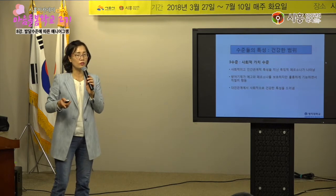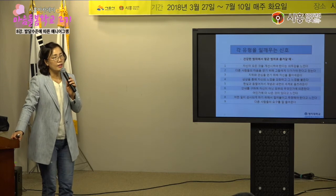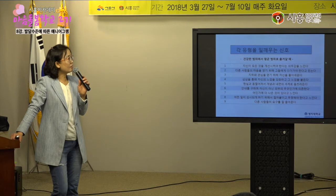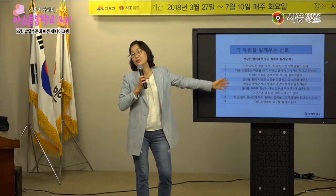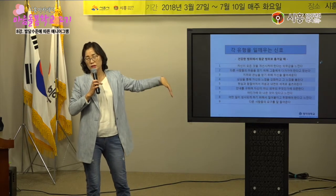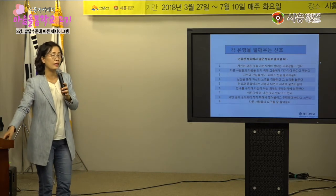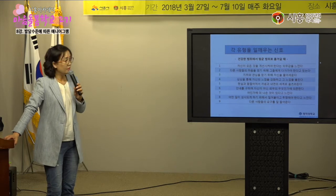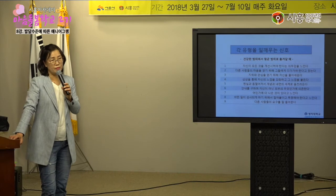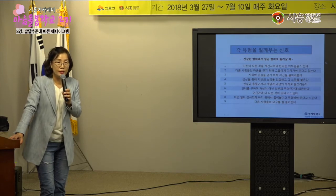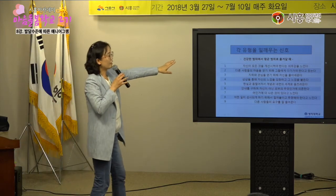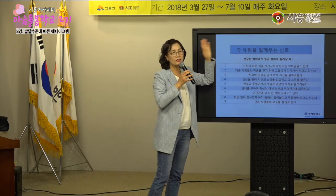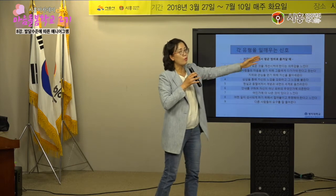쇼크 포인트를 거치면서 4수준으로 내려가는데, 건강한 범위에서 평균 범위로 내려가는 쇼크 포인트의 신호들이 각 유형마다 있어요. 1유형 같은 경우는 내가 모든 것을 개선시켜야 된다는 의무감에 사로잡히기 시작해요. 선생님이 그걸 다 하려고 하세요, 그거 잘못된 거잖아요 — 이게 바로 자신의 유형의 압박감이에요. 자신에 대한 비판도 강하고 옳다라는 신념이 강한데, 이 옳다라는 신념이 내가 모든 것을 다 고쳐야 된다라는 강한 의무감으로 작동하기 시작하는 거죠.